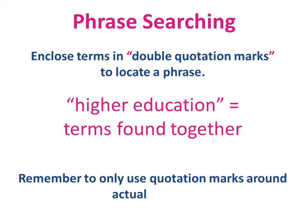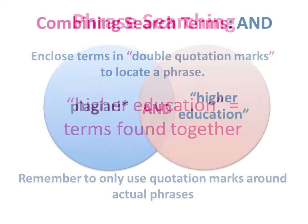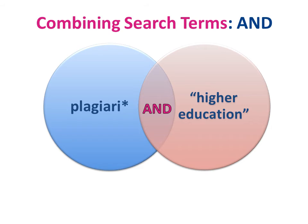We can also use the word AND to further narrow down our search, locating only those articles where all of our search terms appear. As you can see on the screen, by using the word AND we will only obtain those articles covered by the shaded circle — i.e. only those articles that include both of our search terms.